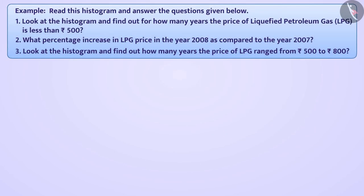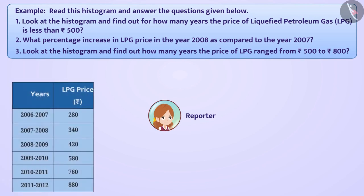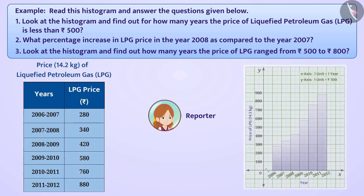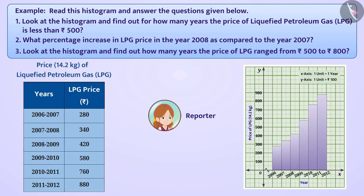Next example: Shruti is a reporter. To publish the news in the newspaper, Shruti studied the change in the price of 14.2 kg of liquefied petroleum gas, i.e. LPG, from the year 2006 to 2012. The information received was thus represented as a histogram and printed in the newspaper. Now, read this histogram and answer the questions below.